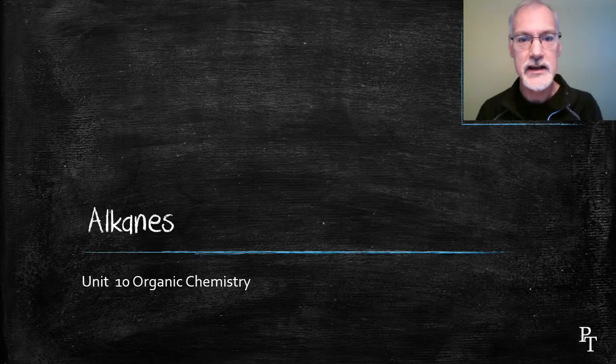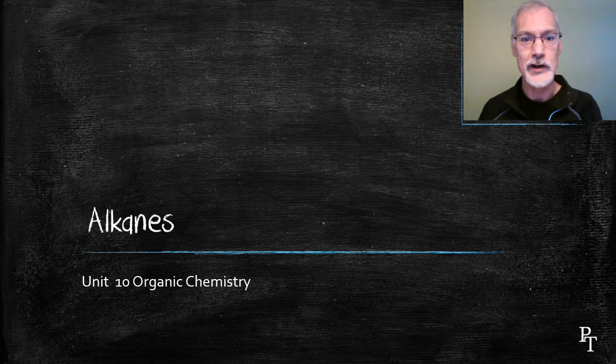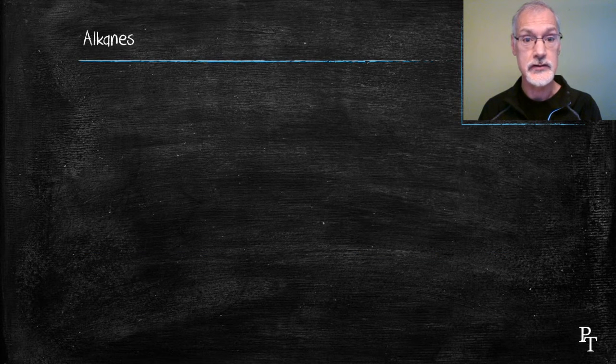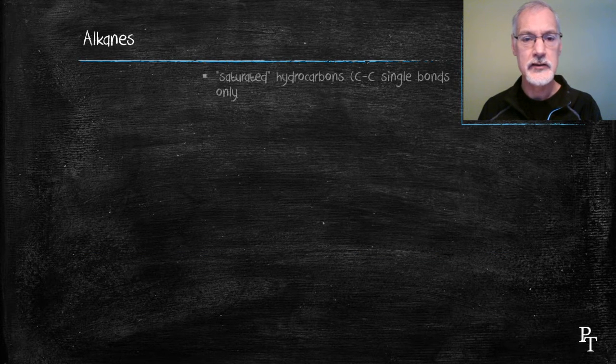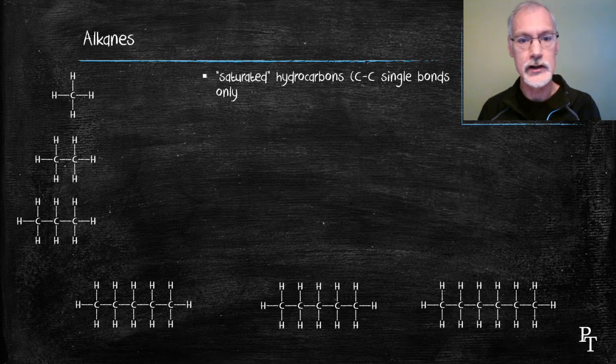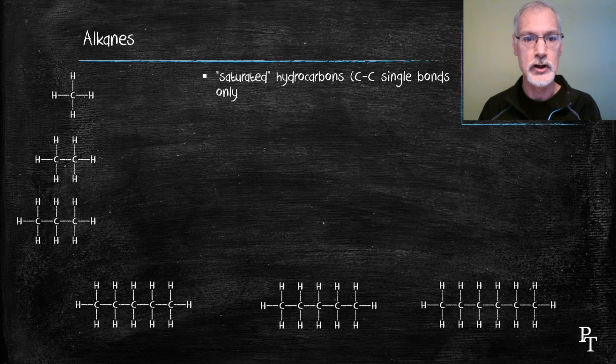Hi again. Today I want to take a look at alkanes, in particular their structures and some of their physical properties. So let's begin by taking a quick look at their structures. The first thing you'll notice is that they contain only the elements hydrogen and carbon, hence they're called hydrocarbons. And the word saturated is used to mean they're full of hydrogens. They can't hold any more.